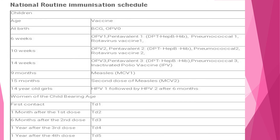This is the overall routine immunization schedule for children and women of childbearing age. At birth, BCG and OPV-0 are given for newborns. At 6 weeks: OPV1, Penta 1, Pneumococcal 1, Rotavirus 1. At 10 weeks: OPV2, Penta 2, Pneumococcal 2, Rotavirus 2. At 14 weeks: OPV3, Penta 3, Pneumococcal 3, and IPV. At 9 months: Measles 1. At 15 months: second dose of measles. At 14 years: HPV 1, followed by HPV 2 after six months. Vitamin A is also sometimes given during vaccination visits.